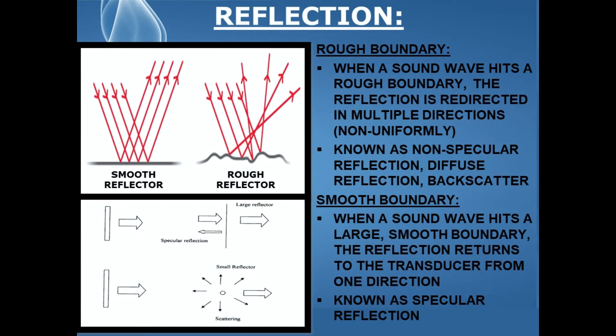Now let's talk about different types of boundaries and how they affect the amount of reflection occurring at that boundary. The first is a rough boundary. When a sound wave hits a rough boundary, the reflection is redirected in multiple directions non-uniformly, and this is known as non-specular reflection, or diffuse reflection, or backscatter.